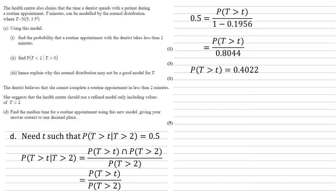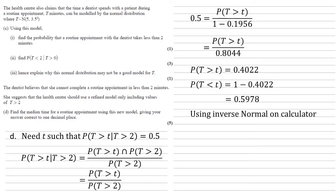To use the calculator we convert to the less-than form: P(T < t) = 1 − 0.4022 = 0.5978. We now use the inverse normal function with an area of 0.5978, mean of 5, and standard deviation of 3.5, giving an answer of 5.9 to one decimal place.